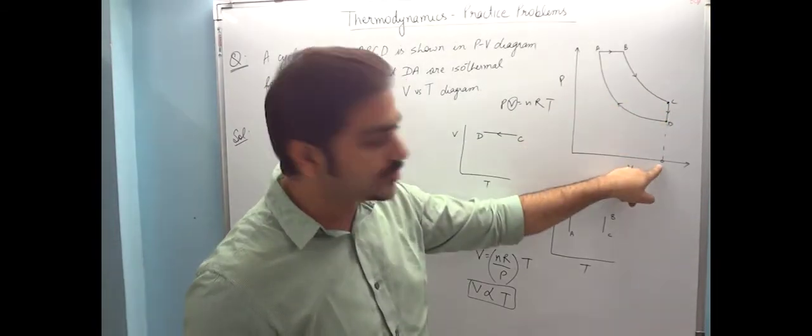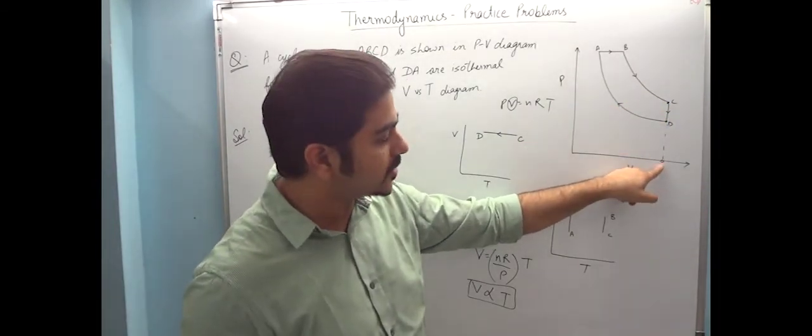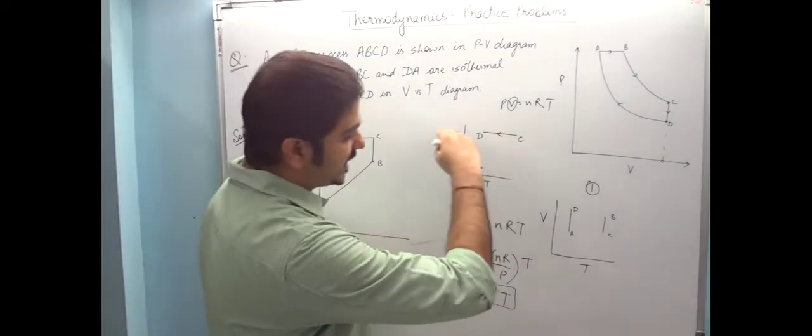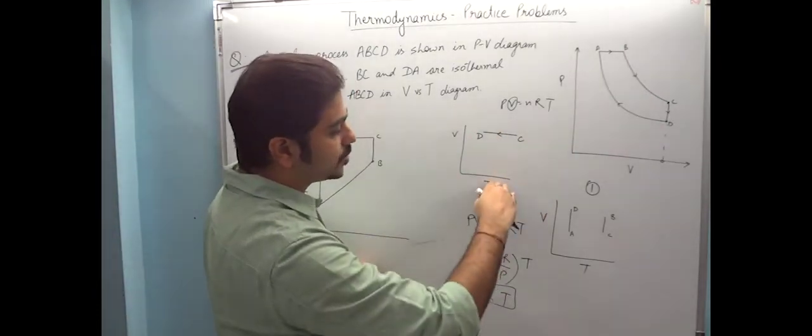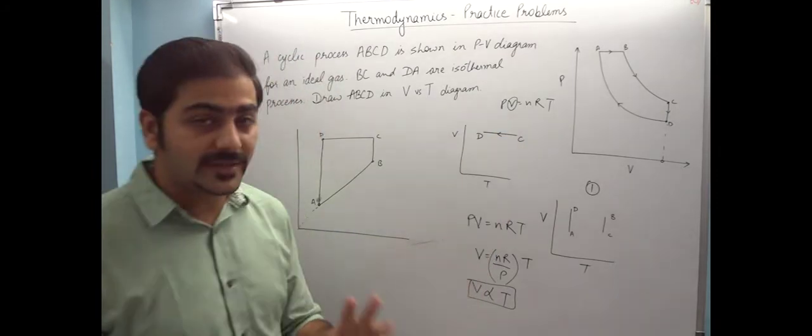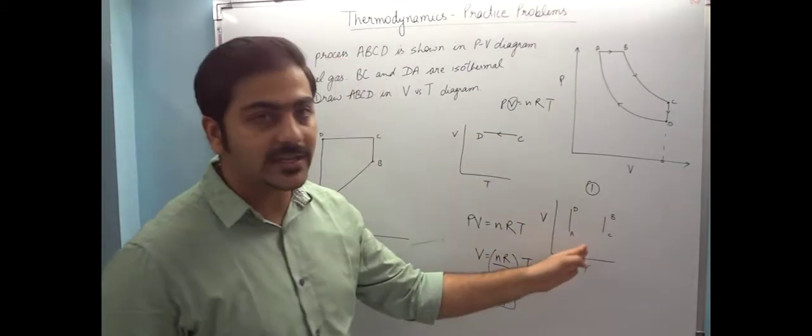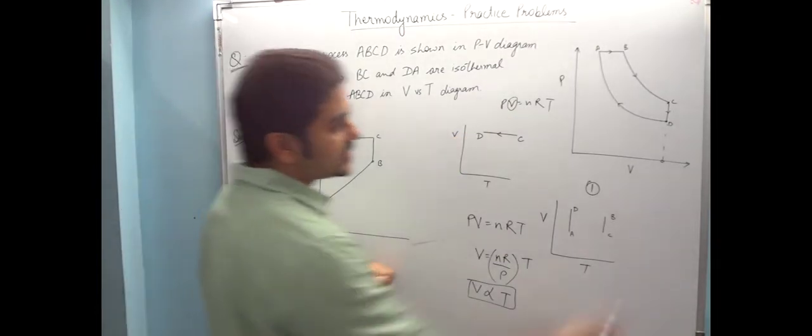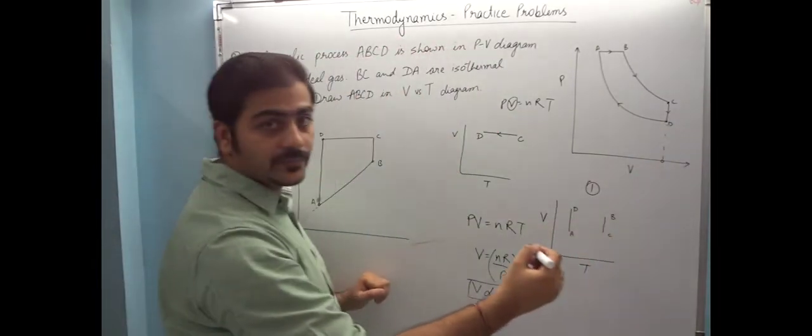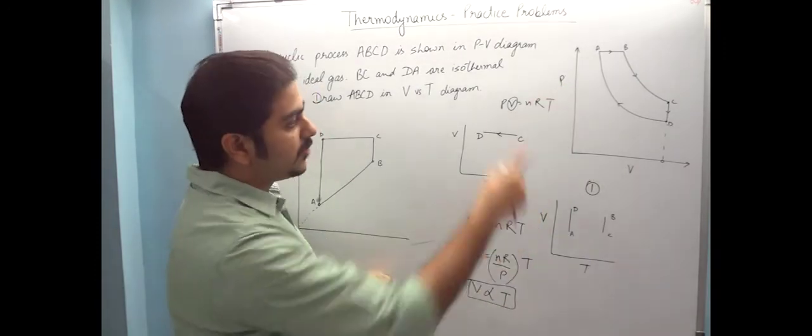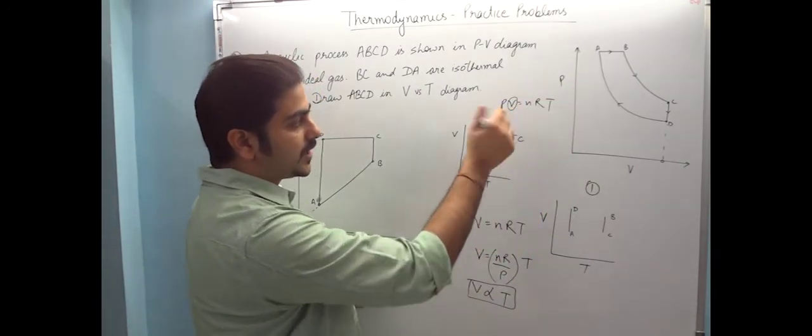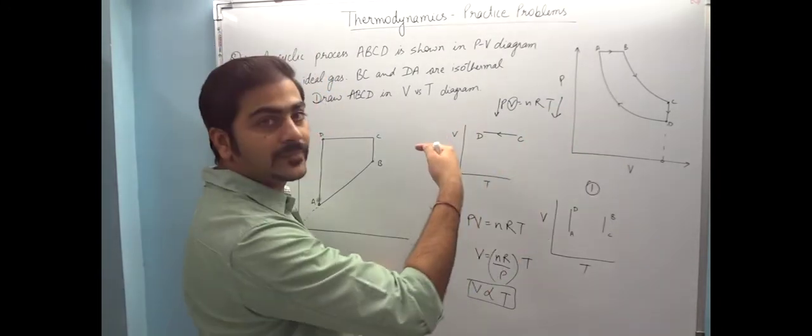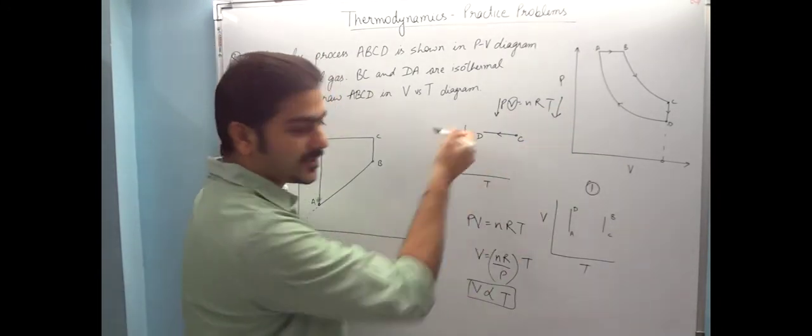Third thing: from C to D, here volume was constant. So since volume was constant, if you make a graph of V vs T, then one straight line should come parallel to temperature axis. So we found out three things: these two vertical lines and this one horizontal line. Fourth thing: since when you move from C to D, your pressure is decreasing, volume remains constant and pressure is decreasing. So due to pressure decreasing, temperature will also decrease. So that means C to D movement is in this direction. So that means C is here and D is here.